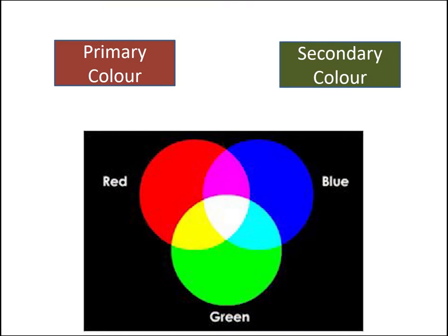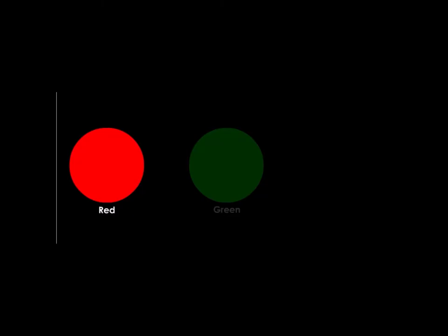Coloured lights can be categorised into two types, namely primary colour and secondary colour. The primary colour is the basic colour that cannot be produced through colour mixing.